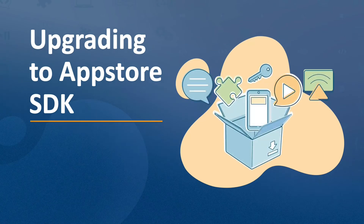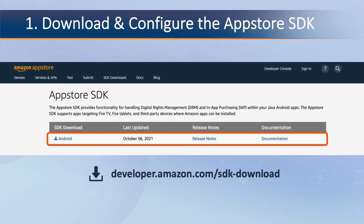To enforce DRM in your app using the App Store SDK DRM API, you need to follow three steps. The first step is to head to the SDK download page and download the new App Store SDK for Android. This download includes the App Store SDK jar file, API documentation, and examples.